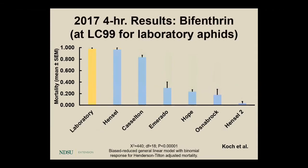Moving to bifenthrin, you see pretty similar results. The laboratory colony shows near 100% control. But by Hope, North Dakota, control was only about 30%. Osnabrock was a little less. Out of the Hensel area, one population showed about 95% susceptibility, but a second population from the same area showed only about 5% control — indicating clear resistance at that location.